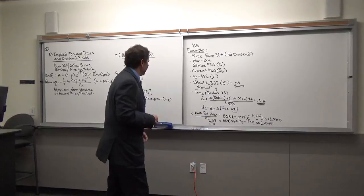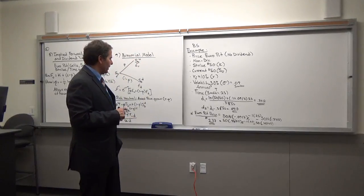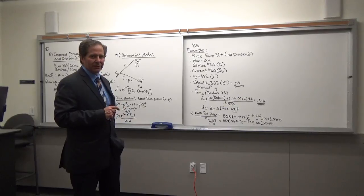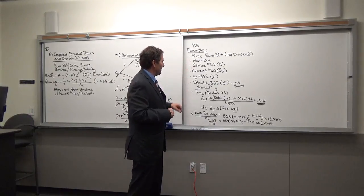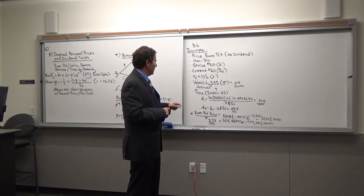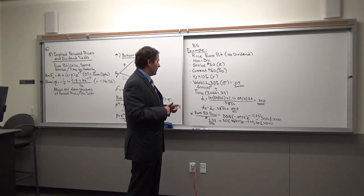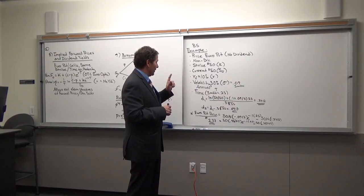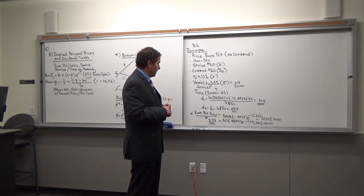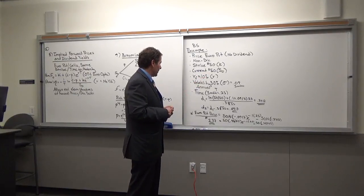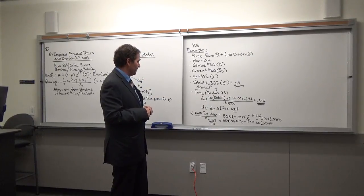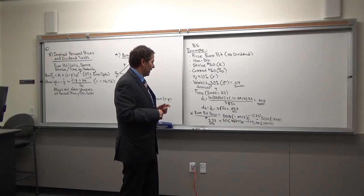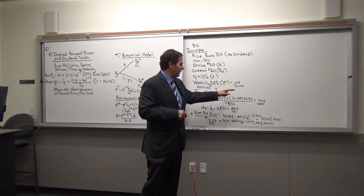And then the last example is really the Black-Scholes model. In this case, we're going to price a European put option with no dividends. So we know that it's not going to pay any, the stock's not going to pay any dividends. The strike price is going to be K. The current price just happens to also be, I'm sorry, the strike price currently is 50, which is the K. The current stock price is also 50, which is S0. The risk-free rate is 10%.